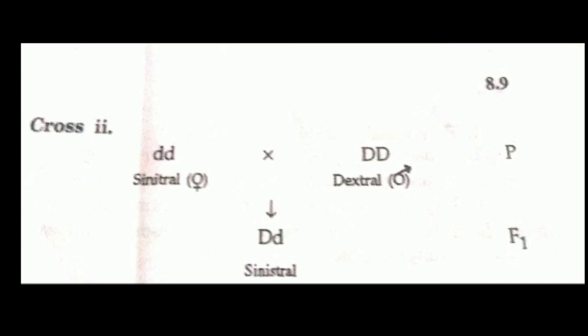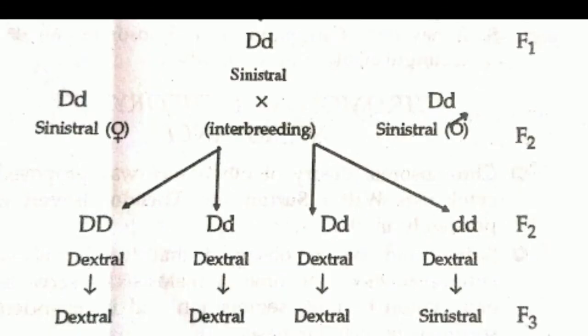In the reciprocal cross, a sinistral female (small d small d) is crossed with a dextral male (capital D capital D). The F1 progeny are capital D small d, but this generation is sinistral. When these F1 sinistral individuals interbreed, the F2 generation is dextral. Since sinistral was not obtained in F2, this confirms that the inheritance is controlled by the female's cytoplasmic genes.